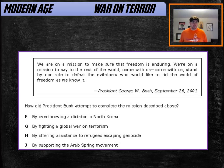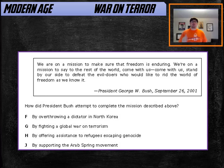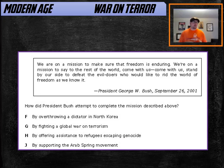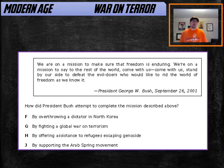In fact, there's something called the Bush Doctrine, which you might be tested on. The Bush Doctrine said we would not distinguish between terrorists and the countries that harbored them. So if terrorists were in your country and the country knew about it and still allowed it, we would see the country and the terrorists as one and the same.